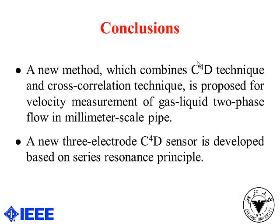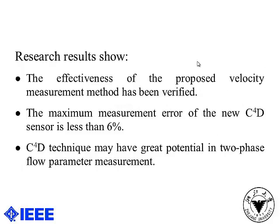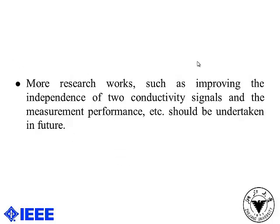Conclusions: In this research, a new method combining C4G technique and cross-correlation technique is proposed for velocity measurement of gas-liquid two-phase flow in mm-scale pipe. A new three-electrode C4G sensor is developed based on the zero-impedance principle. From the research results, the effectiveness of the proposed velocity measurement method has been verified, and the maximum measurement error is less than 6%. C4G technique may have greater potential in two-phase flow measurement. Due to the complexity of two-phase flow, more research work should be undertaken in future.